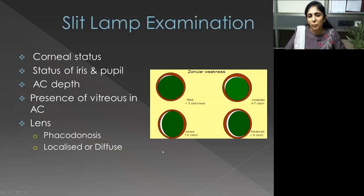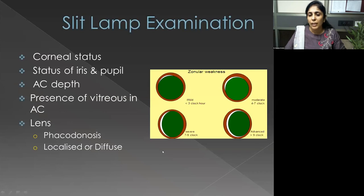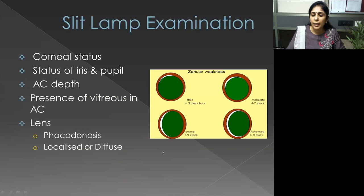It's important to have a complete pre-operative analysis. We look at corneal status, the iris and pupil, anterior chamber depth — which could be too deep or shallow depending on where the lens is — presence of vitreous in the AC, and the need for vitrectomy as we start surgery. For the lens, we assess whether subluxation is localized (mild, moderate, or severe) or diffuse, as seen in pseudoexfoliation and spherophakia.